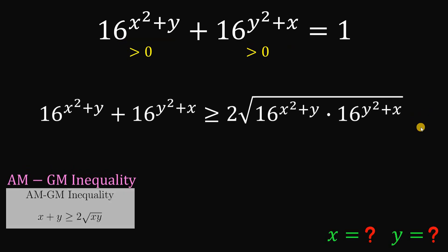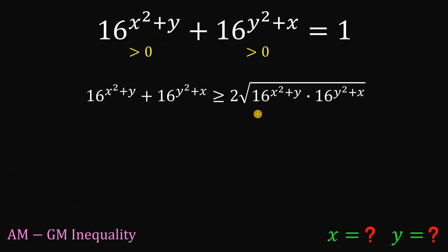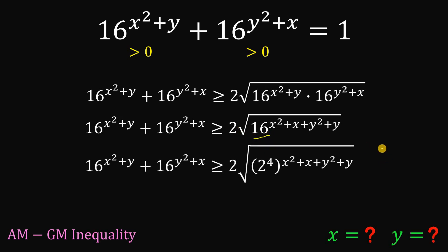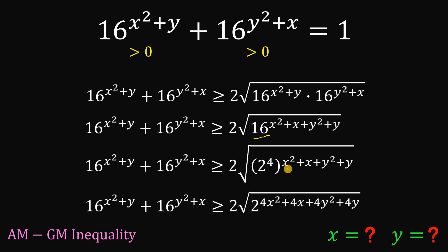Now let's focus on this result and simplify the right-hand side of our inequality. Take note that we have the same base, so when we multiply these, we can add the exponents. So we have 16 raised to the power of x squared plus y plus y squared plus x. We can rearrange some terms. Notice this 16 — it is raised to a power of a power. Using laws of exponents, we can multiply 4 into x squared plus x plus y squared plus y, giving us the next expression.